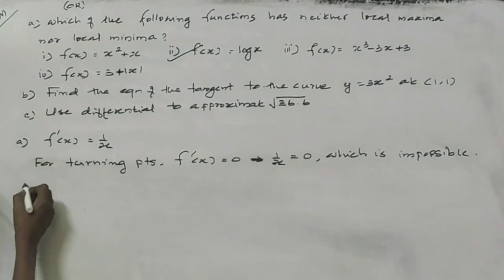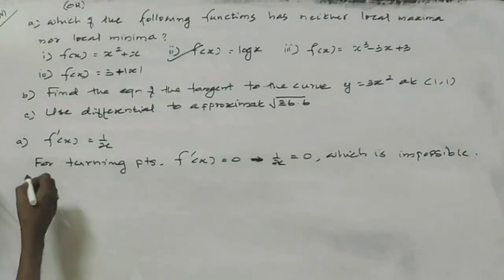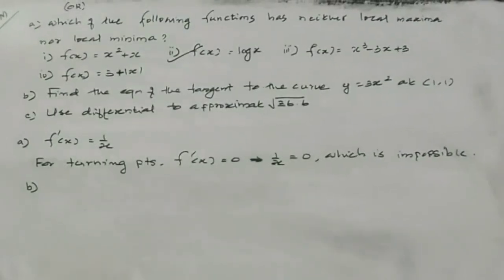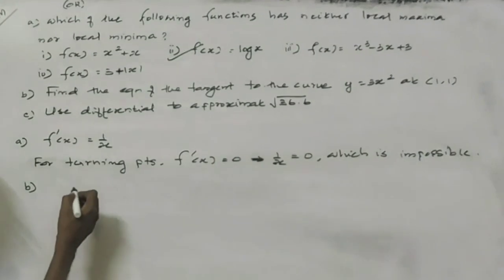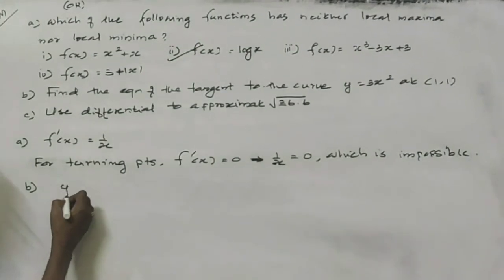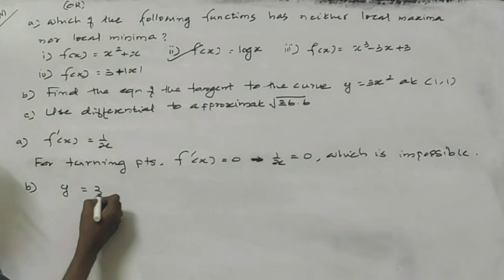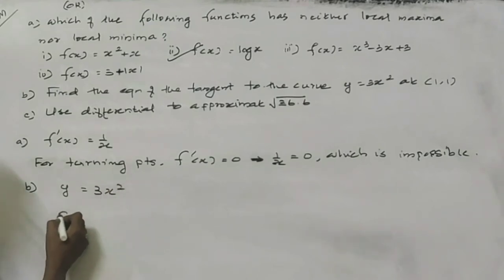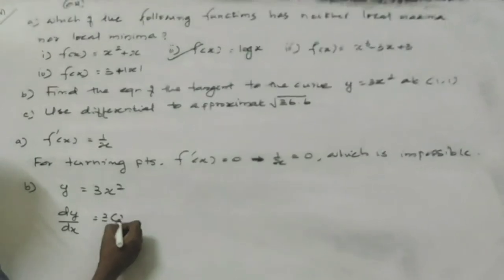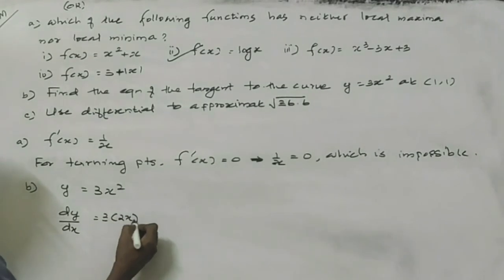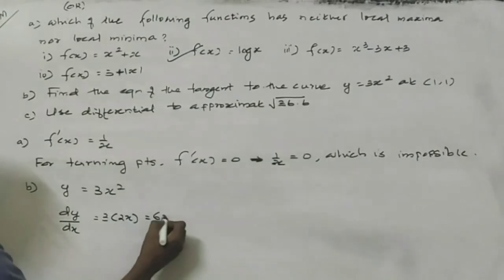The second question is: find the equation of the tangent to the curve y equal to 3x squared at the point (1, 1). For y equal to 3x squared, we find dy/dx, that is 3 into 2x, which equals 6x.